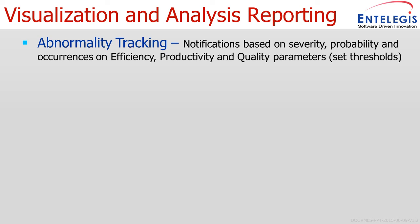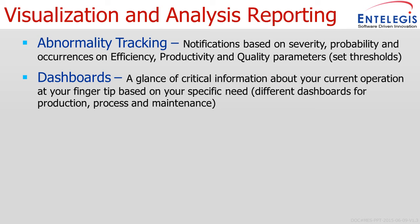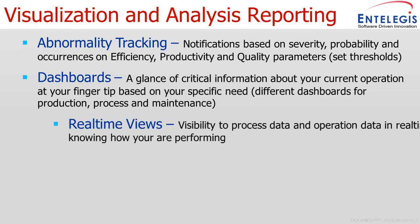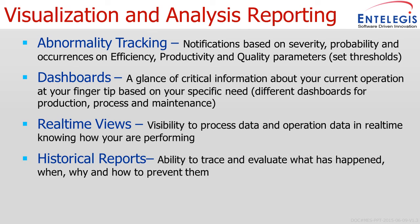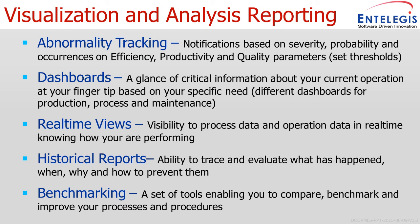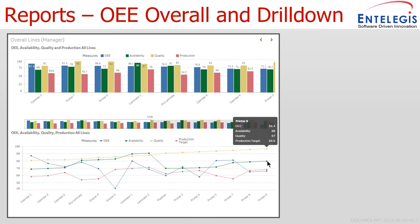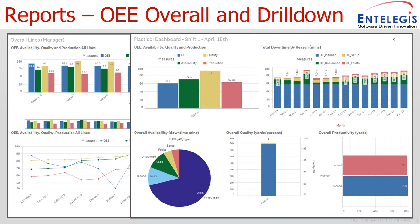Once all that data is acquired, we can begin to visualize it through various mediums: abnormality tracking, business dashboards for management and executives, real-time views of actual data in columnar format, historical reports and trends, and benchmarking — where we create a baseline from historical reports and compare against it. Here's an example showing multiple lines in a manufacturing plant, displaying the overall OEE broken down by availability, quality, and production.